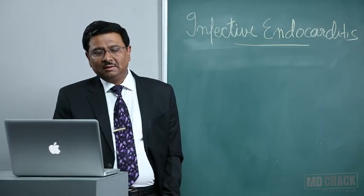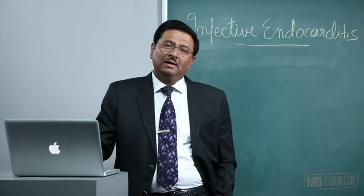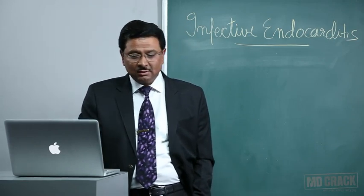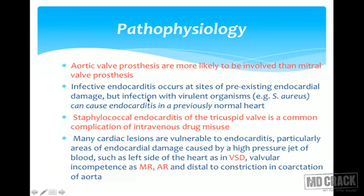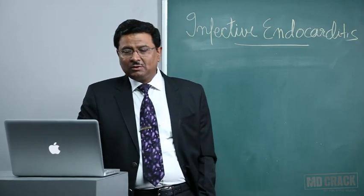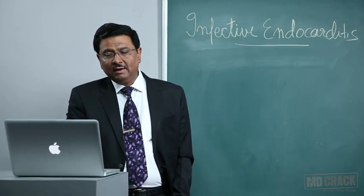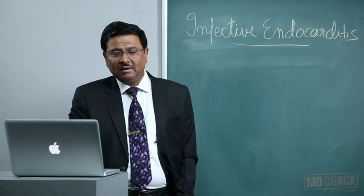A very frequently asked MCQ: which valve is most commonly involved in intravenous drug abusers? In native valve endocarditis, the mitral valve is commonly involved followed by the aortic valve. However, aortic valve prostheses are more likely to be involved than mitral valve prostheses in prosthetic valve endocarditis.